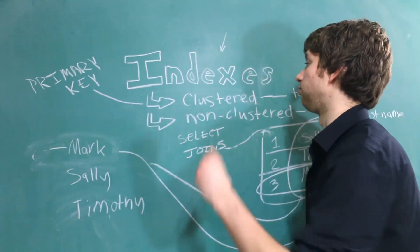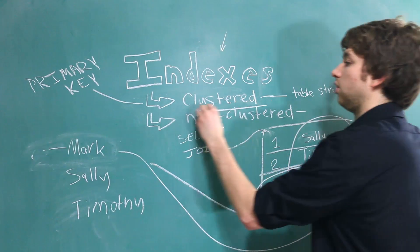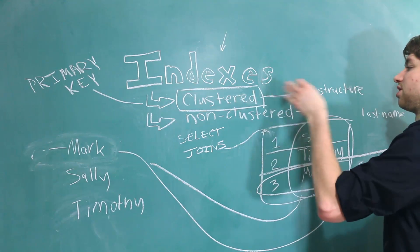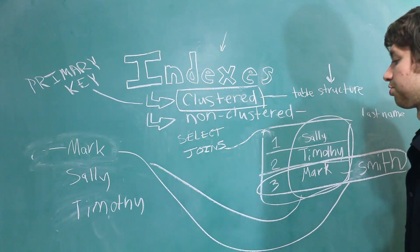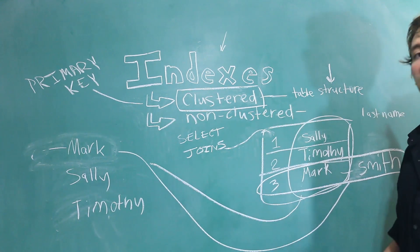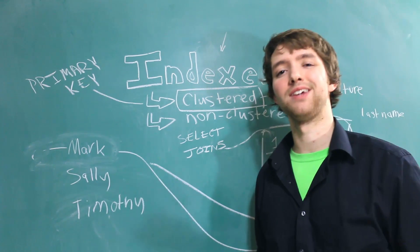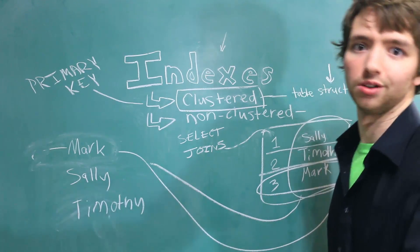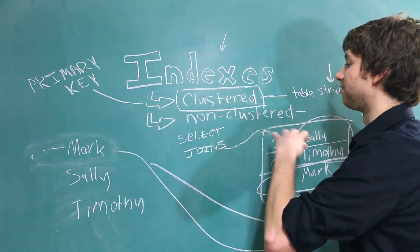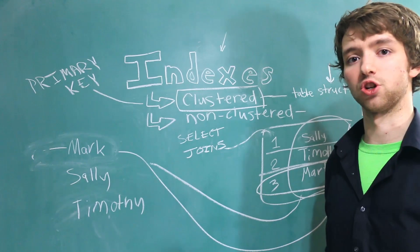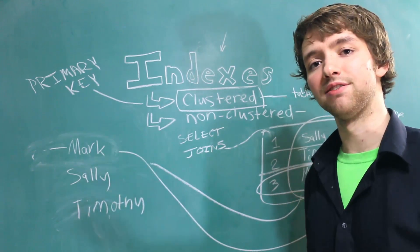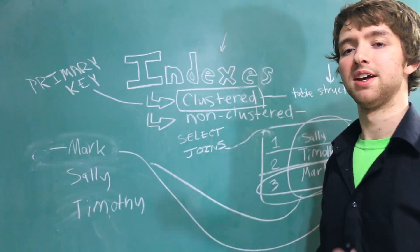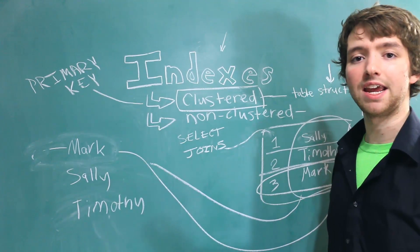The last thing you guys need to know is that you can only have one clustered index. Only one. And why does that make sense? It makes sense because this determines the table structure. You can't have the table structured in one order and also in a different order. Only one index can determine the order. You can have as many non-clustered indexes as you want. I mean, there's a limit, but in general the number of non-clustered indexes is not a concern.